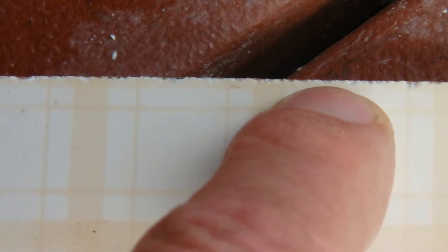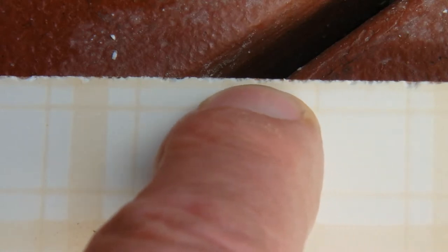There we go, there's the close-up of that cut on the ceramic tile. You can see a few fairly small chips out of the front of it.